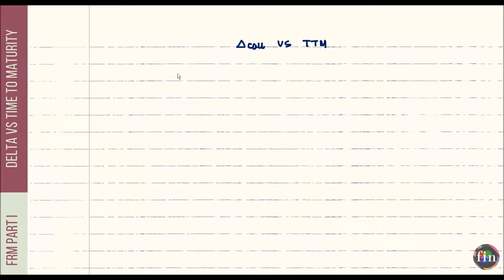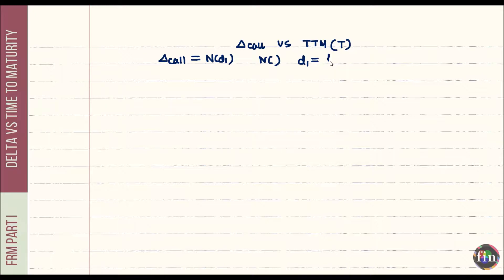Let's start on a more mathematical note. Let's write down what the delta of a call option is before we find its sensitivity to the time to maturity — let's call time to maturity T. The delta of a call option is simply N(d1), where N denotes the CDF of the standard normal distribution — the area to the left of any given value. d1 is defined as: ln(S/K) plus (r plus sigma-squared over 2) times T, all divided by sigma times root T.